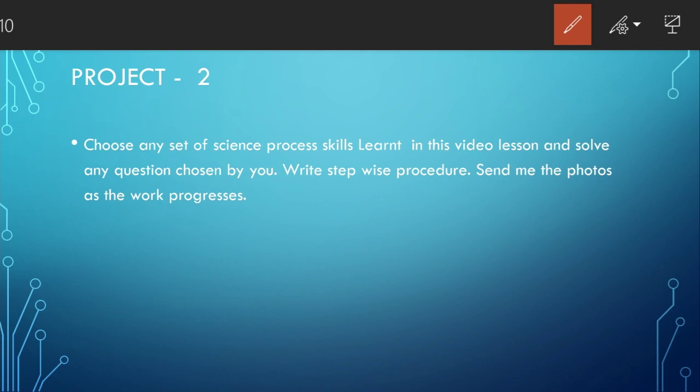Then moving on to project 2. Today we have learned different types of science process skills, set of skills. So what you are going to do is, you choose any set of process skills mentioned in this video and you choose any question. Choose any question and try to solve the question using science process skills mentioned in this video lesson. And write stepwise procedure. Send me the photos as the work progresses. When you are working and when the work progresses, you can send me the details. I will follow up and I will give you an evaluation or assessment to it.